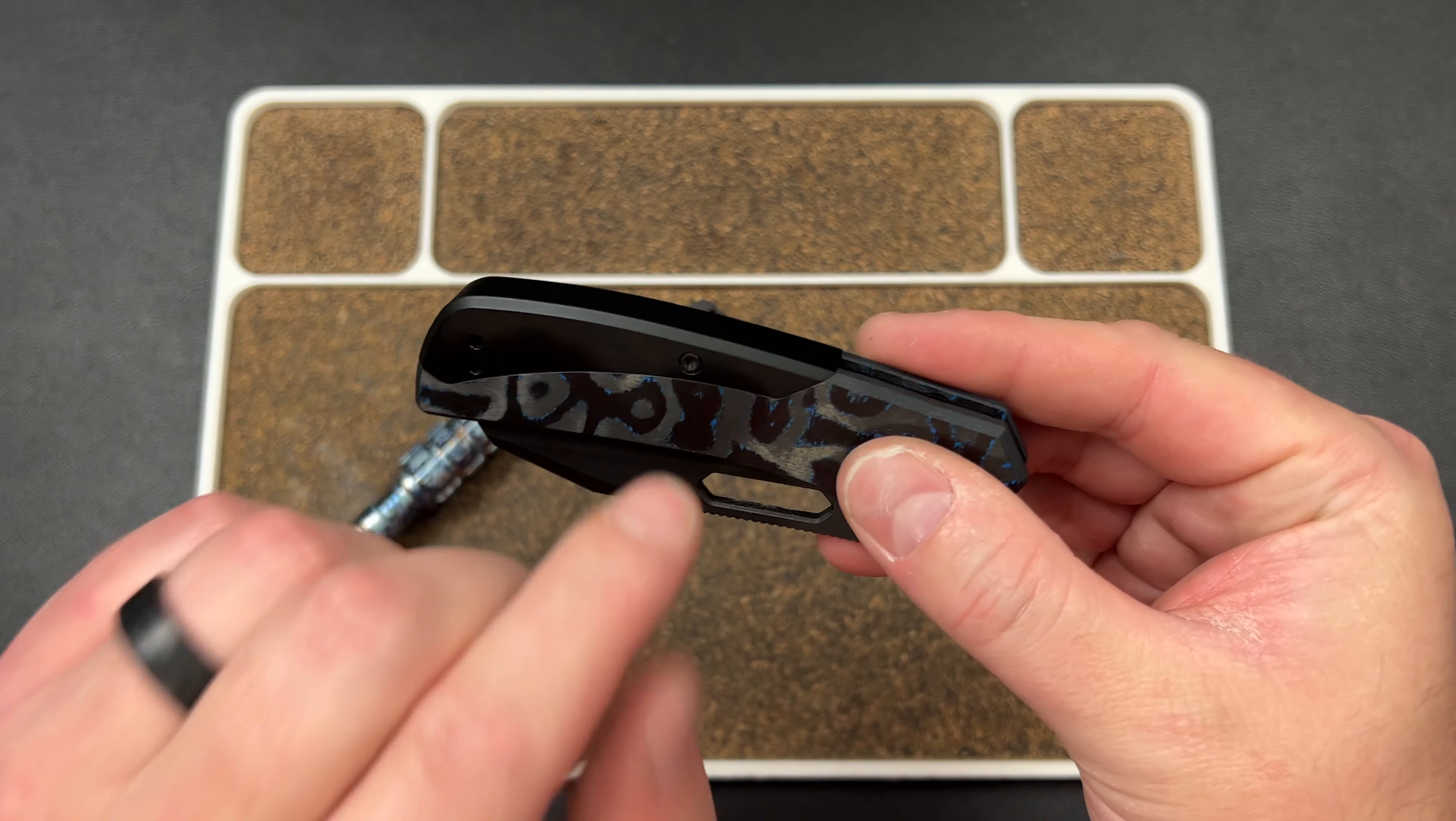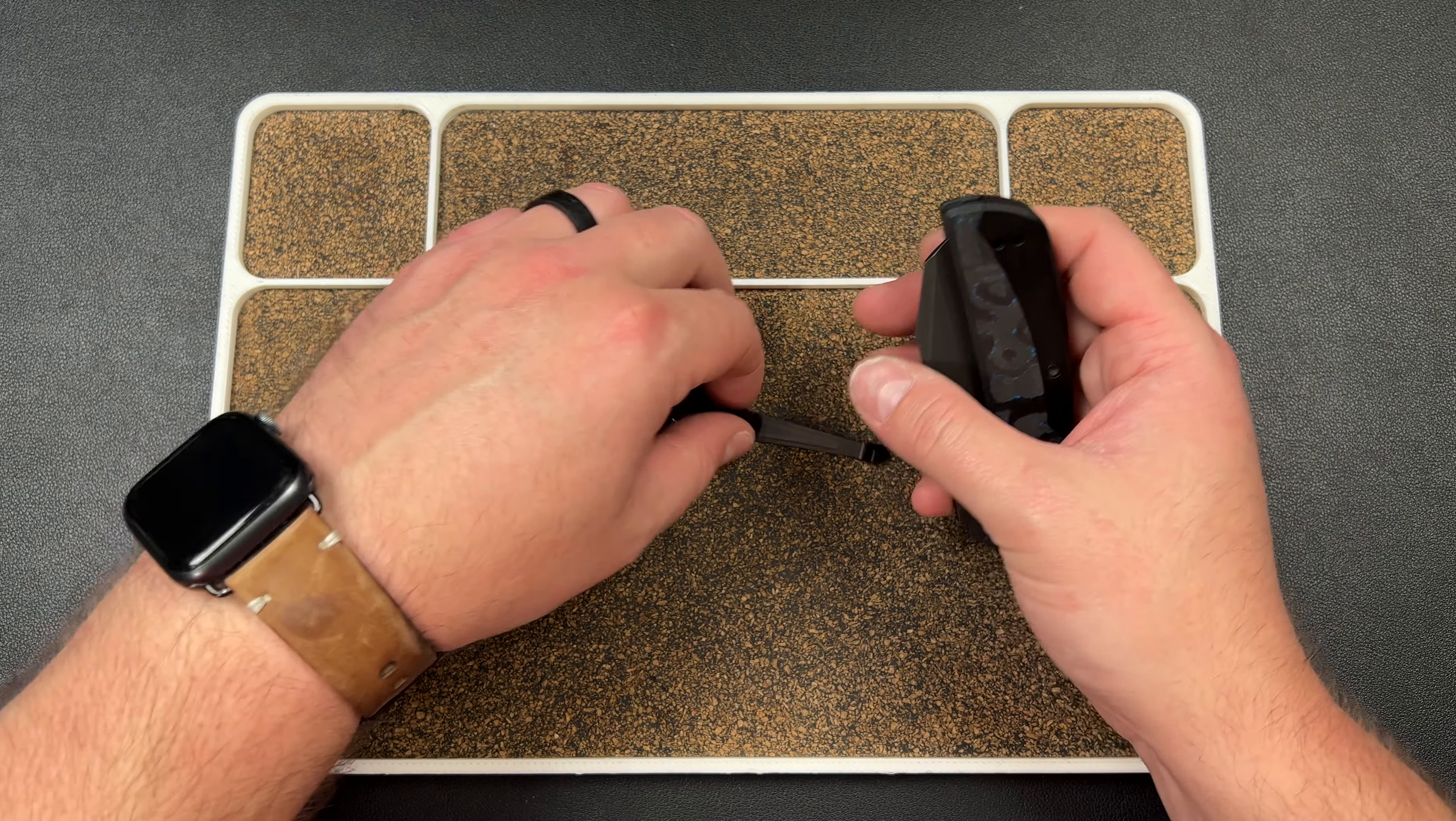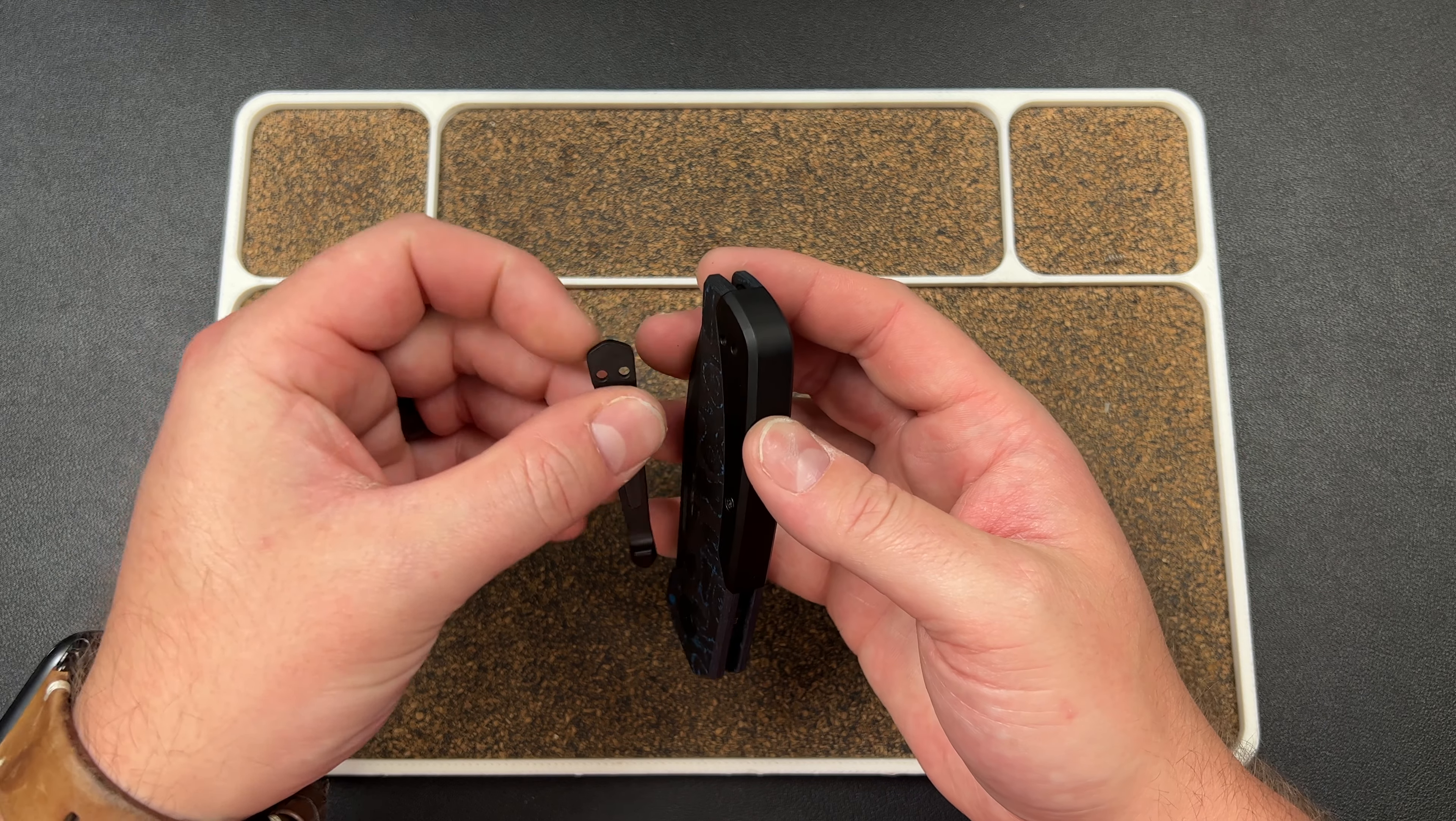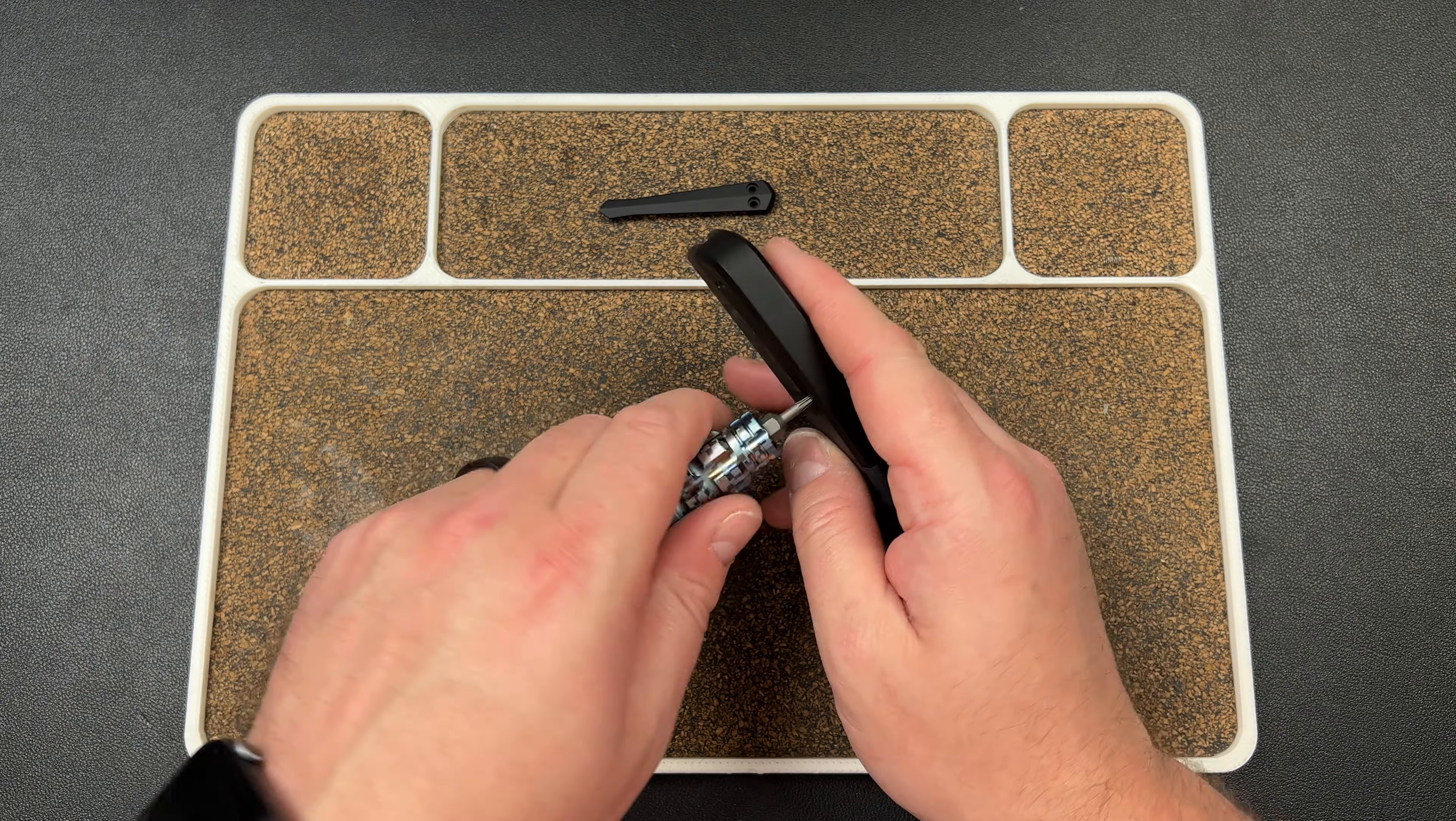You can see this side sticks up a little bit, this side's pretty good. If you tighten this it kind of messes with everything, so we're going to try to dial that in. And then we want the clip to actually seat into the backspacer so that it's a little more stable.